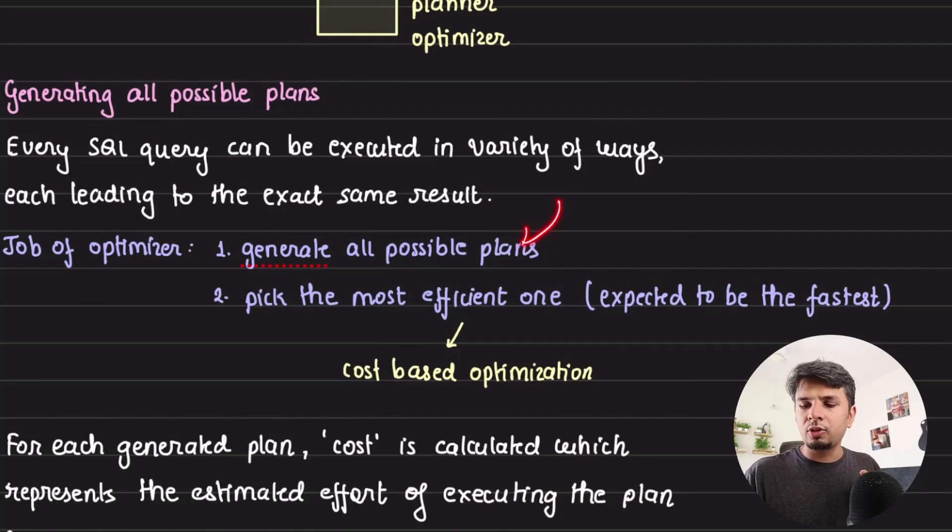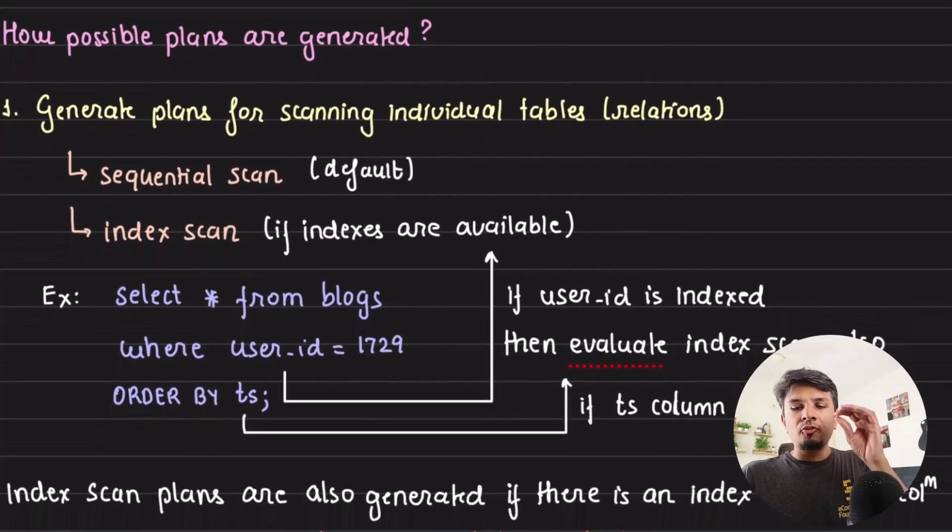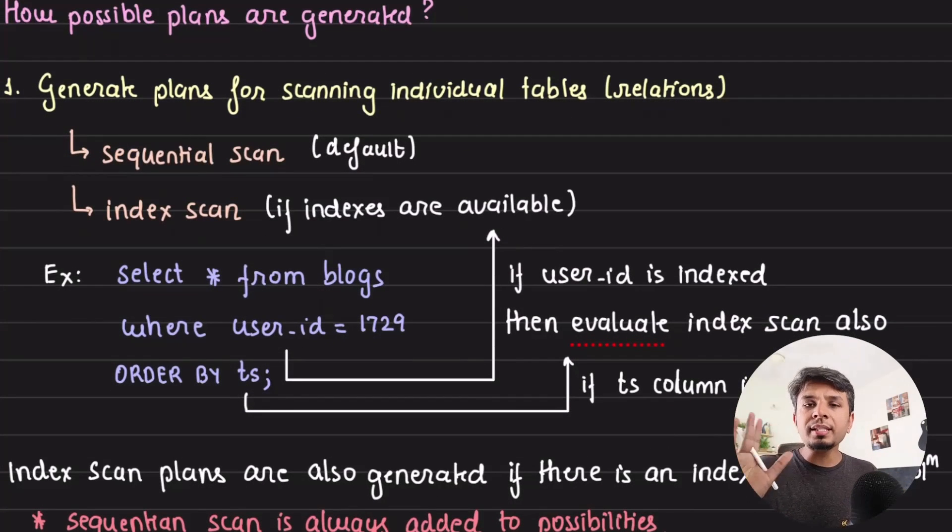In this video, our entire focus will be on how to generate all possible query execution plans for a given query and how a database like Postgres or in general, any relational database does it. The first step that any planner and optimizer does in order to generate all possible query execution plans involves the tables in the SQL query.